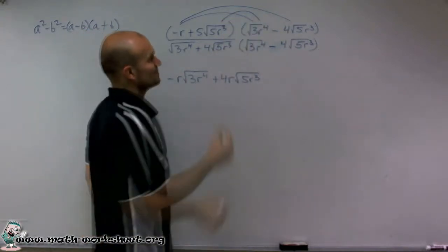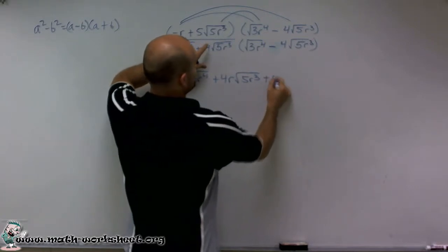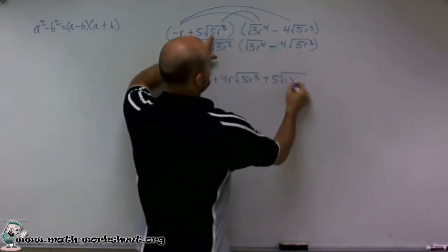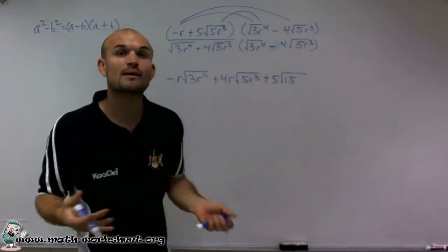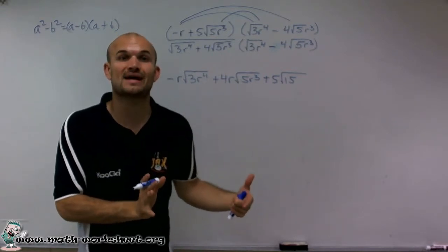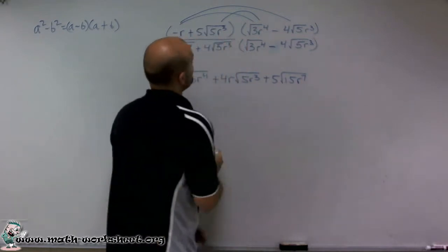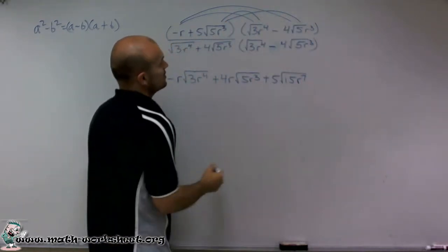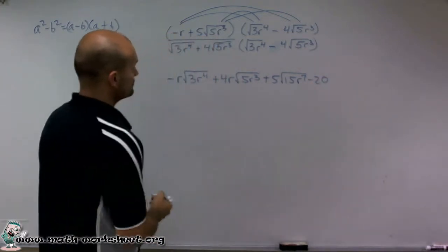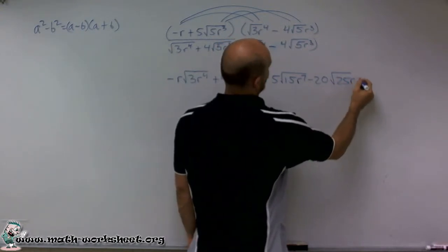Now on my inner two terms, I can multiply my radicands. So I have a positive 5, then 5 times 3 produces 15. And r cubed times r to the fourth, by rules of exponents, when you multiply numbers with the same base and they have exponents, you add the exponents. So that gives me r to the seventh. Then I multiply the last two terms, which produces negative 20 times the square root of 25r to the sixth.